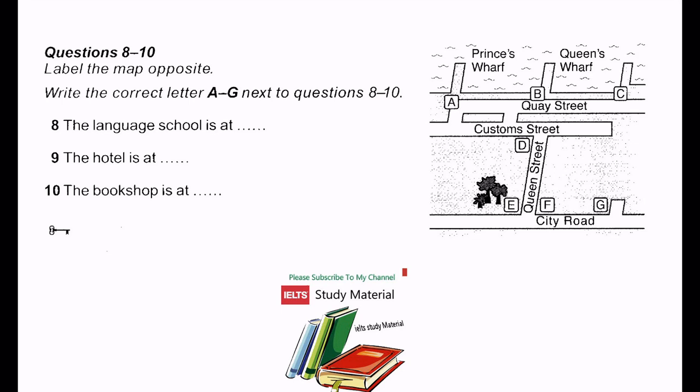Right. Got it. And what about accommodation? Well, I've booked you into a hotel for the first three nights and then the accommodation officer will find you a family to live with. Good. And where's the hotel? It's a short walk from the college, on the corner of Queen Street and City Road. Which corner, exactly? On the left-hand side, as we're looking at the map. OK. Near the little park? Yes, that's right.